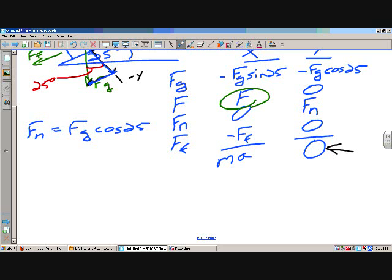And you can start plugging in the numbers now. You guys love numbers. Mg cosine 25, 65 kilograms times 9.8.